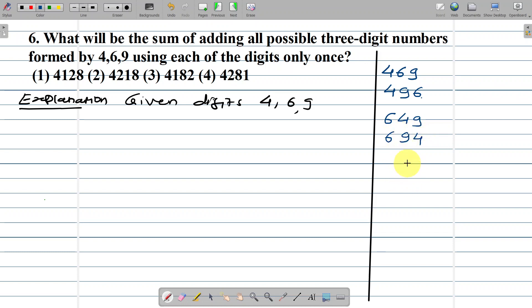Continuing with the remaining combinations: 946 and 964. So we have six possible three-digit numbers total.